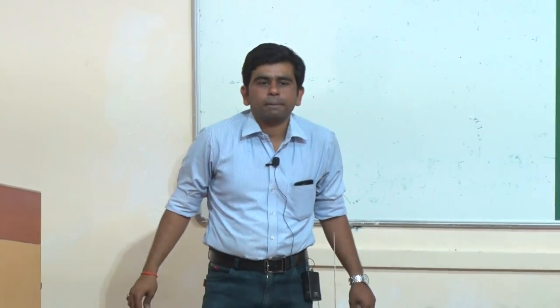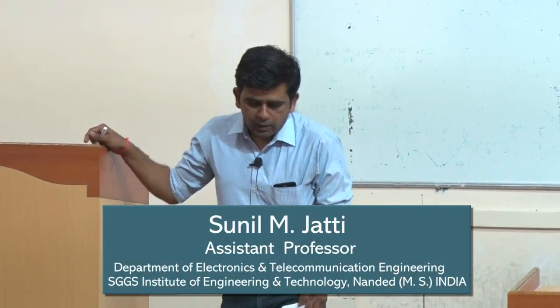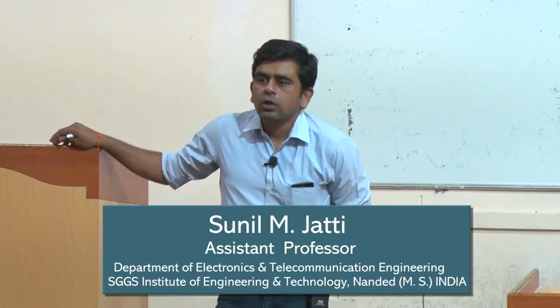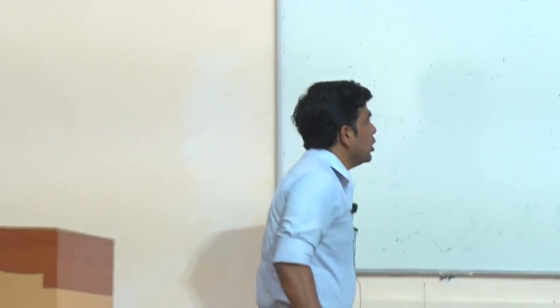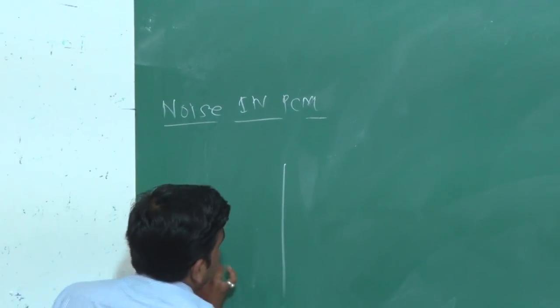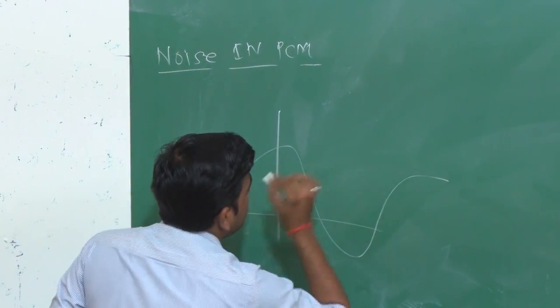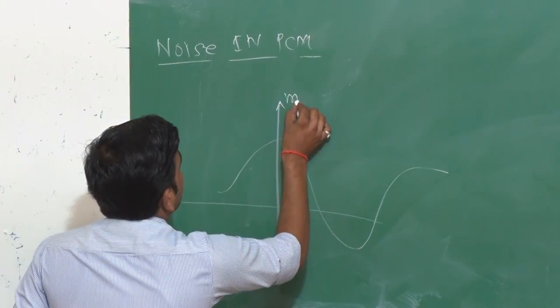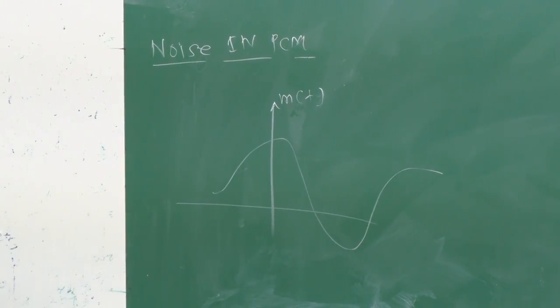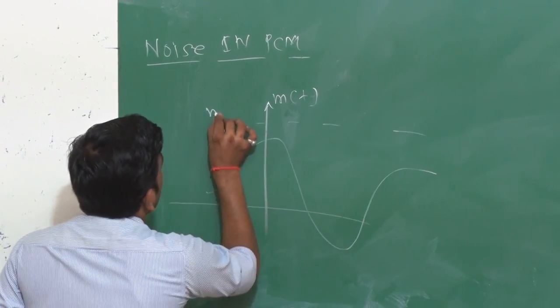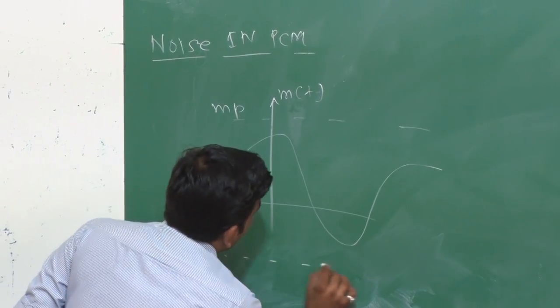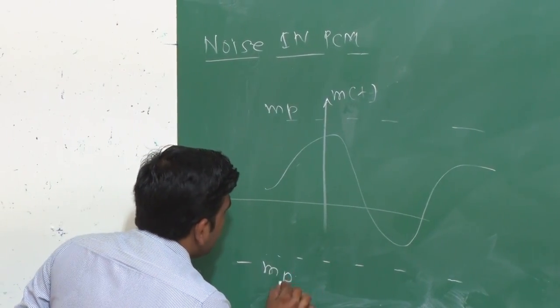Good afternoon to all of you. In the last lecture, we have seen our pulse modulation system. Now we have to start with noise in PCM, pulse code modulation system. In a pulse code modulation system, suppose we are having any signal m(t). First of all, we have to decide its limits — it is ranging from plus m_p to minus m_p.